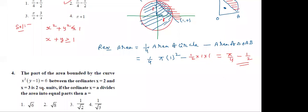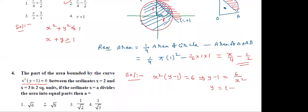Now see the 6th question. The area bounded by the curve x²(y − 1) = 6. Calculate: y − 1 = 6/x², so y = 1 + 6/x². The ordinates are x = 2 and x = 3, and the total area is 2 square units. If ordinate x = A divides the area into two equal parts, find A.